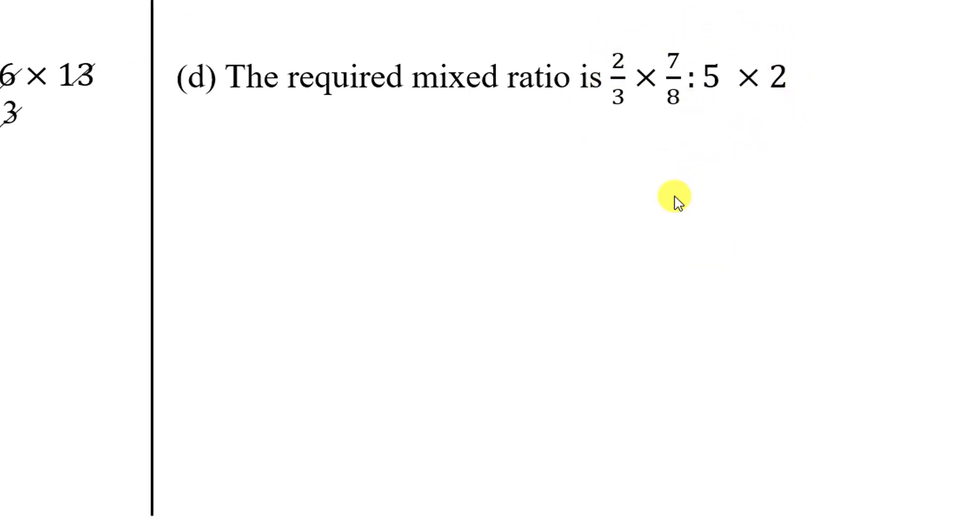Here, 2, 1 is 2. This side 2 cancel. This side 8 cancel after. This side ratio this side and this side. Numerator, numerator cancel with denominator, denominator. On our own side numerator denominator can be cancelled.